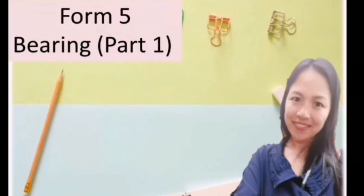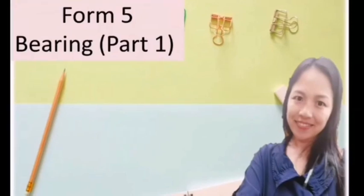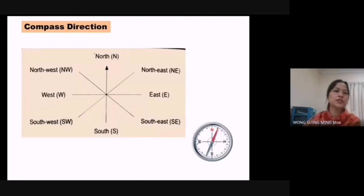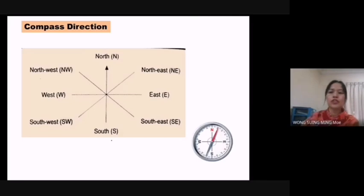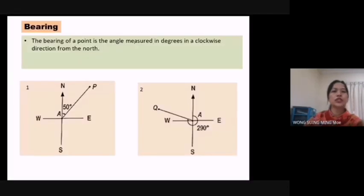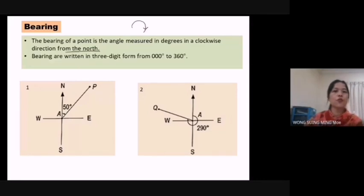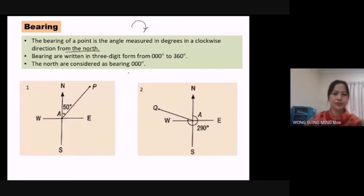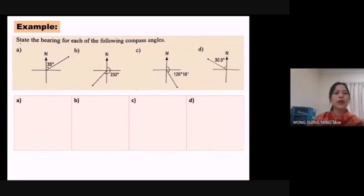Hi everyone, today we are going to learn a new topic: bearing. First I will explain the basic concept. This is compass direction — we must know the direction first: north, east, west, and south. North is the direction in which a compass needle normally points. The bearing of a point is the angle measured in degrees in a clockwise direction from the north. Bearings are written in three-digit form, from 000° to 360°. North is considered as bearing 000°.